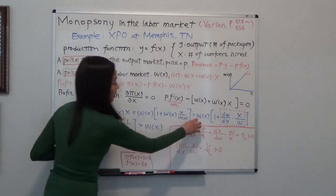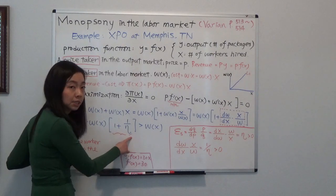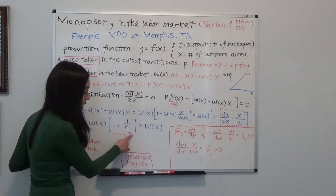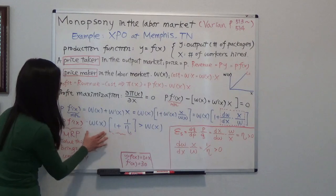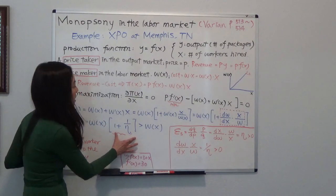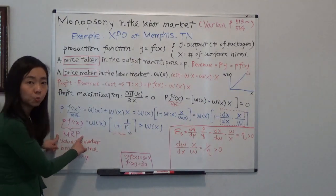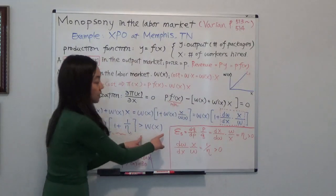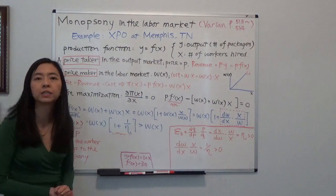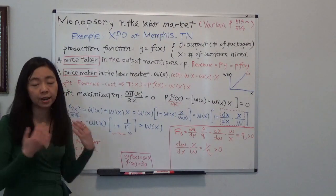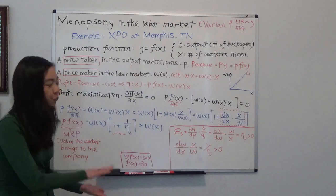On the right-hand side, you see that's the wage times 1 plus the reciprocal of elasticity of supply, elasticity of labor supply. So this thing is going to be greater than 1, and therefore wage times something greater than 1 is going to be greater than your wage. Therefore, you can see that the value you provide to the company is going to be higher than your wage. And that is very straightforward because you can imagine that if you are working for a monopsony, they are not going to pay you the value you provide for the company. They are going to try to suppress your wage.